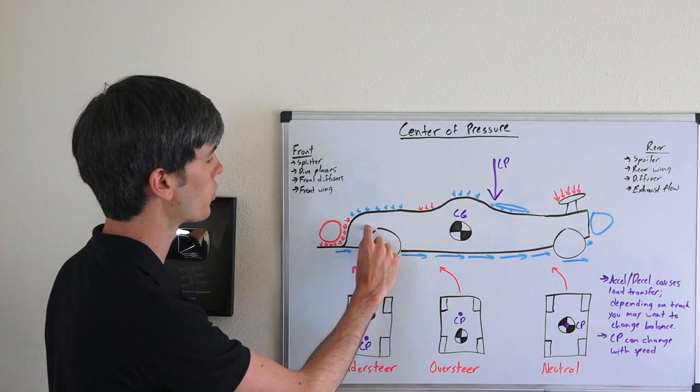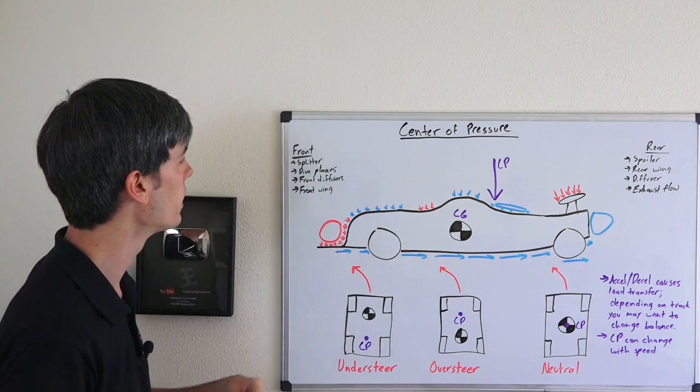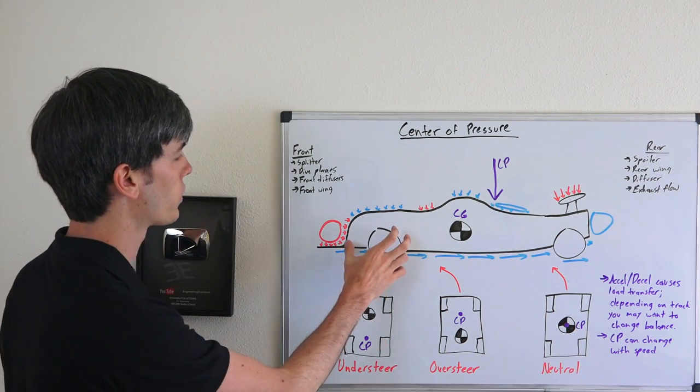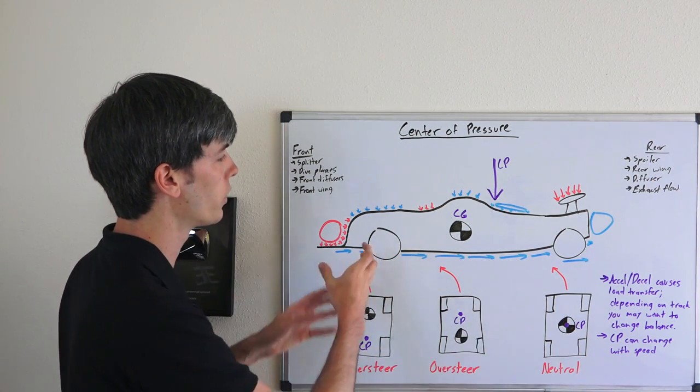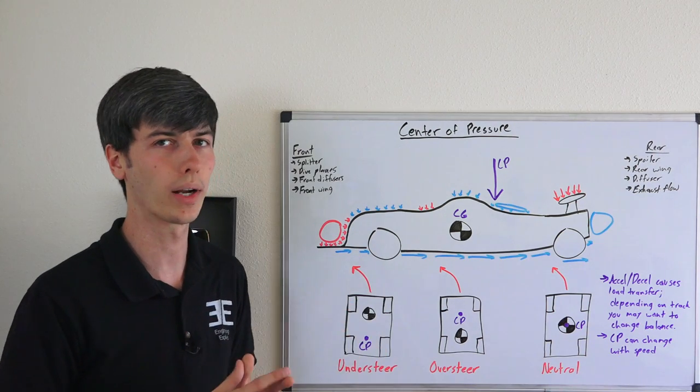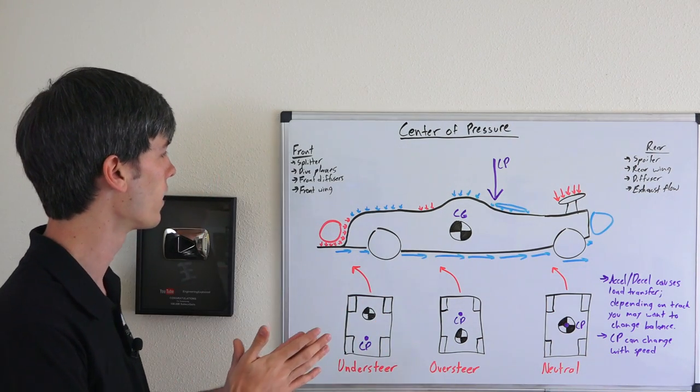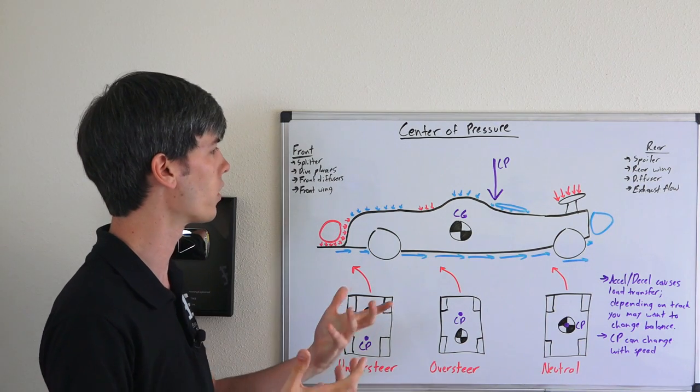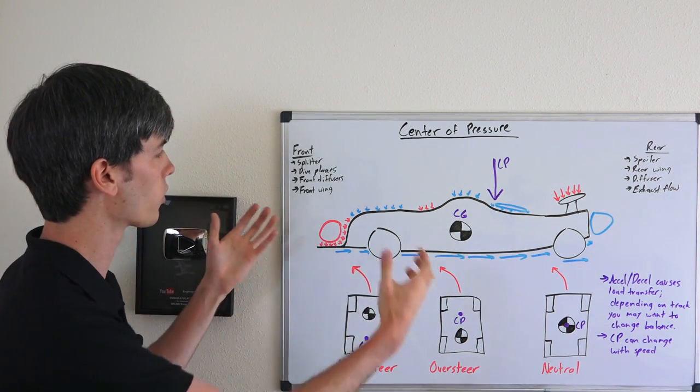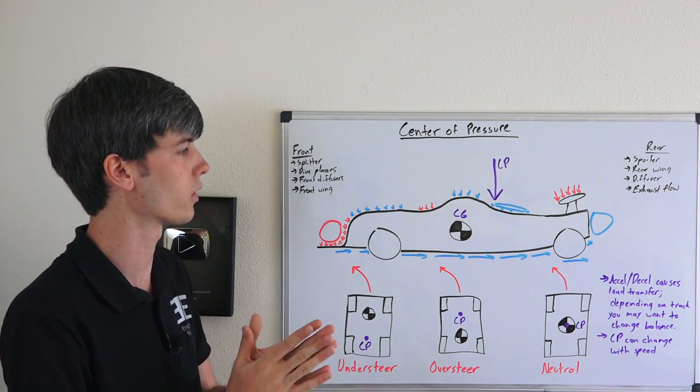You can also have dive planes, which would be kind of these little wings up at the front. Front diffusers, which basically is a compromise in your diffuser system, and that's typically due to regulations why you would run something like that. And then of course front wings, things like in Formula One or IndyCar where you do have a front wing to increase the downforce at the front of the vehicle.